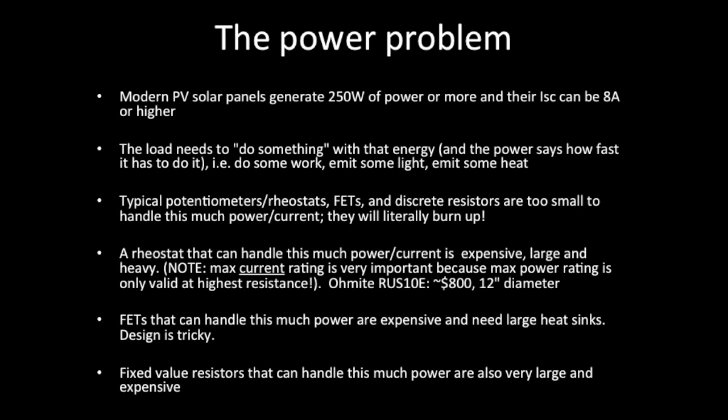If you're shopping for a rheostat, you have to look at the max current rating, because the max power rating is only valid at its highest resistance. If you're interested in the ISC current going through it at its lowest resistance, you need one rated at that current. An example is the Ohmite RUS-10E — it costs $800, is 12 inches in diameter, three inches thick, and probably weighs 50 or 60 pounds. FETs that can handle this much power are expensive and need large heat sinks, and fixed-value resistors are also very large, expensive, and you need a lot of them for a load bank.